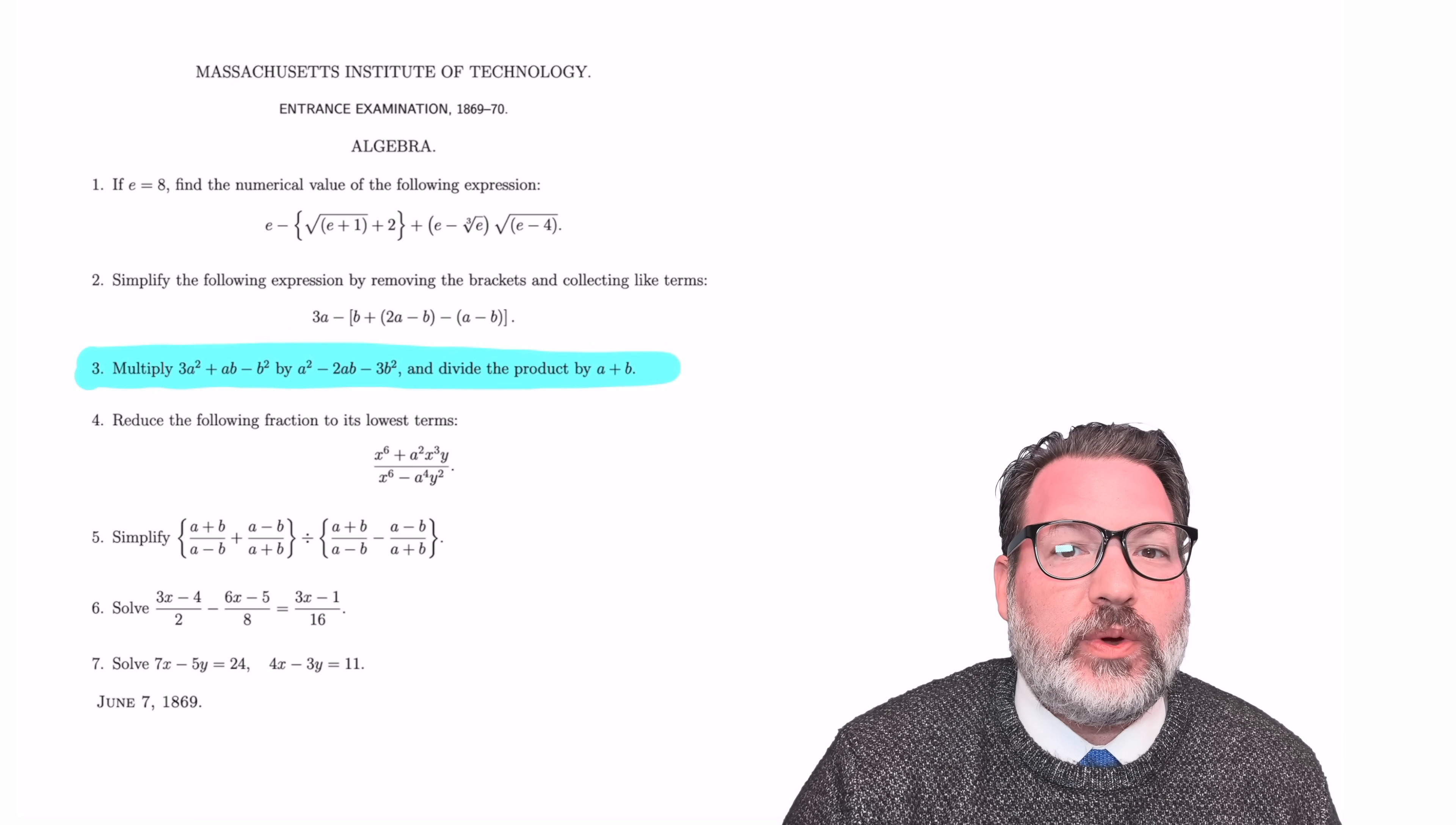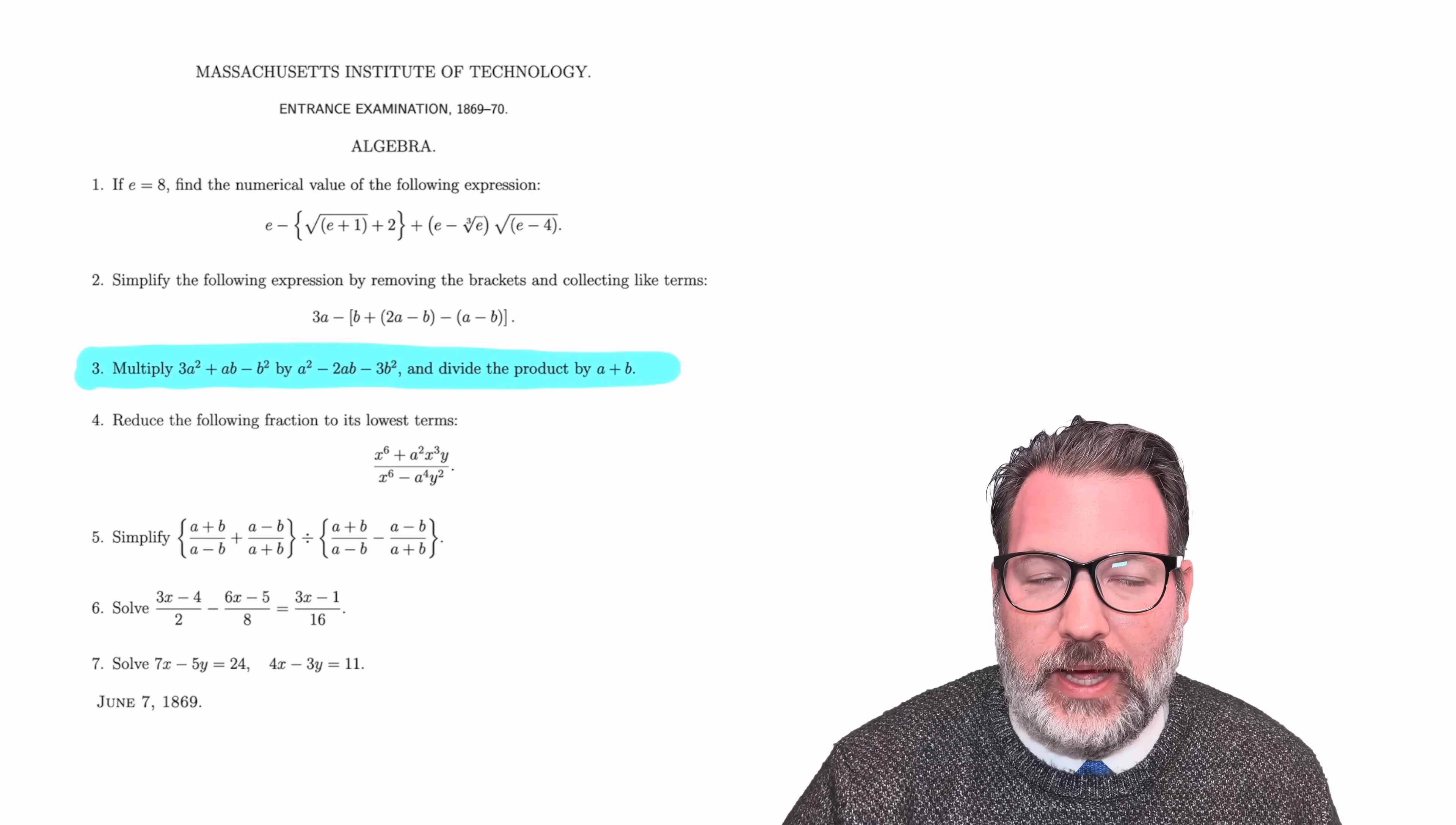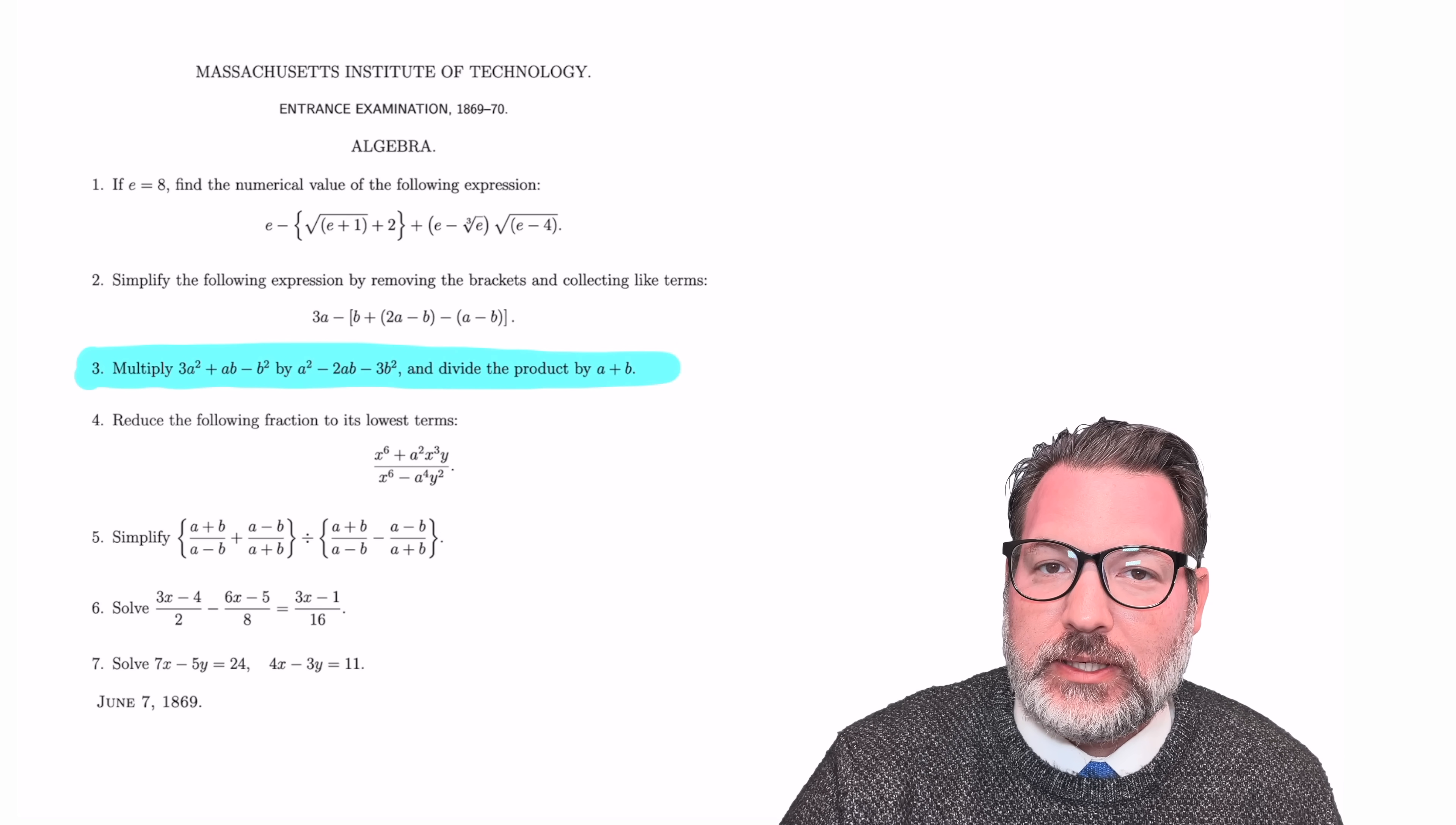Multiply 3a squared plus ab minus b squared by a squared minus 2ab plus 3b squared, and then divide that product by a plus b. And not only is this a thing that we still ask students to do today, it's a thing that a particularly modern technique would really help that student accomplish. And so what I want to do is look a little bit at that technique, and then how we could use it to solve this question from the 1869 MIT entrance exam.